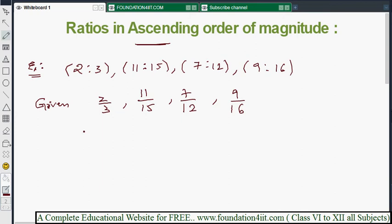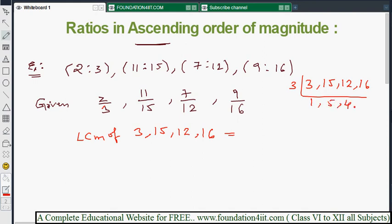First step we need to take all the denominators of fraction and find out LCM. LCM of least common multiple I need to find out for every denominator. That is 3, 15, 12 and 16. If you solve that 3, 15, 12 and 16 LCM. I will explain: 3 table 1, 5, 4 and 16 because it is not divisible. Again, take 4 table 1, 5, 4. 3, 4 is 12, 12, 5 is 60 and 64 is 240.